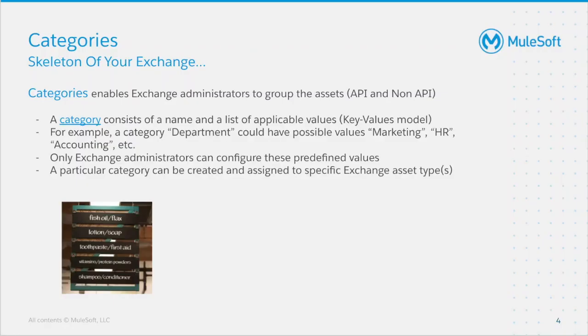Categories enable exchange administrators to group the assets — APIs and non-APIs. A category consists of a name and a list of applicable values. For example, a category called department could have possible values: marketing, HR, and accounting. Only exchange administrators can configure these predefined values. A particular category can be created and assigned to a specific exchange asset type.